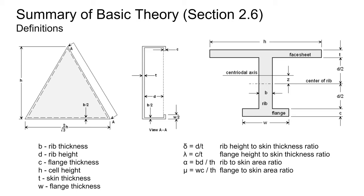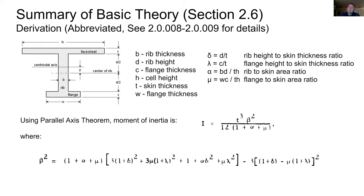Question about flanges and machining: yes, for initial designs we're not going to do flanges. Basically you would need an end mill with an undercut capability. I would encourage you — if a design really improves by having flanges, we can talk about incorporating that. But for getting our very first tank out the door, not having flanges is just easier.